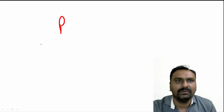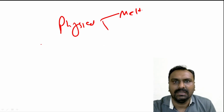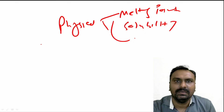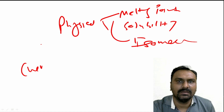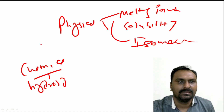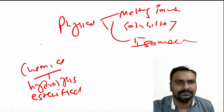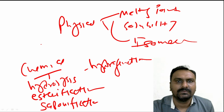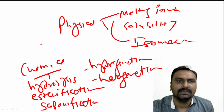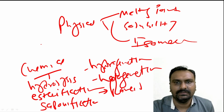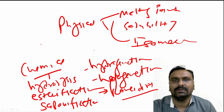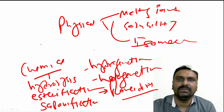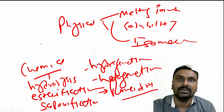This is all about today's lecture. We have seen the physical properties — melting point, solubility, and isomerism — and the chemical properties — hydrolysis, esterification, saponification, hydrogenation, halogenation, and rancidity. This is all about the physical and chemical properties of fatty acids. I hope this video is useful to you. If you like this video, please hit the like button, share this video with your friends, subscribe to my channel, and press the bell icon so that you can get notifications for my future videos. Thank you friends for watching, bye.